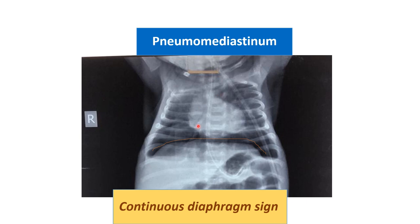Sometimes a newborn has both pneumomediastinum and pneumothorax simultaneously due to barotrauma or infection. Bacterial infection or trauma can cause pneumothorax, which may rupture and lead to pneumothorax, pneumomediastinum, or both — so they may be present simultaneously. However, in this x-ray you can see bronchovascular markings are present throughout the lung field, and the radiolucent shadow is only present in the mediastinal area, confirming this continuous diaphragm sign is due to pneumomediastinum.